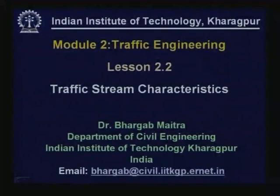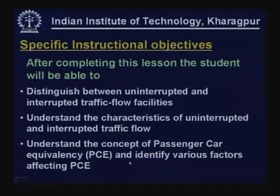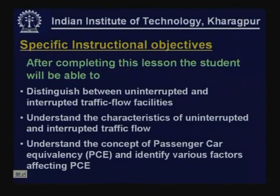This is Module 2.2 on traffic stream characteristics. After completing this lesson, the student will be able to distinguish between interrupted and uninterrupted flow facilities, understand the characteristics of both uninterrupted and interrupted traffic flows, understand the concept of passenger car equivalency, and identify various factors affecting PCE values.